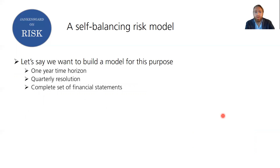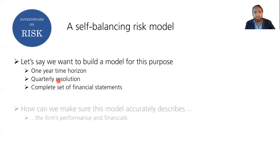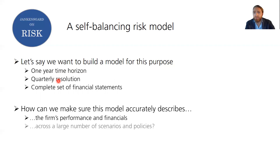So let's say we want to do this. We have to choose some parameters when designing the model: time horizon and resolution. Are we talking monthly, quarterly, or yearly observations? In this case we'll go for one year — that's what most companies look ahead to at minimum. We'll adopt quarterly resolution, meaning we'll model every quarter, with the four quarters adding up to one year.